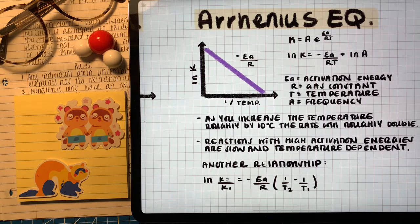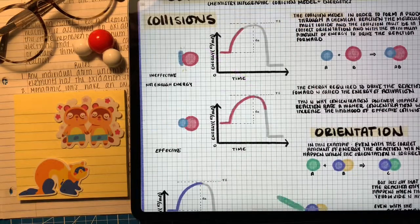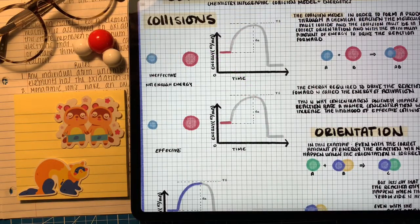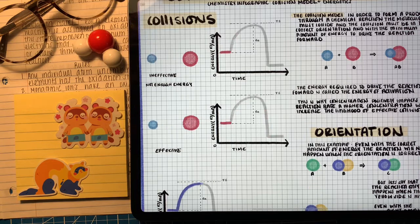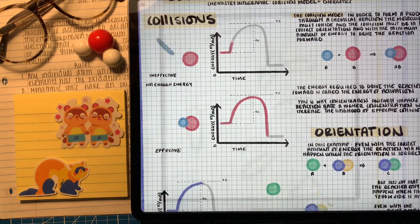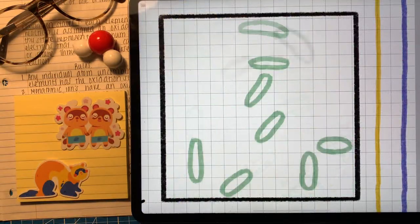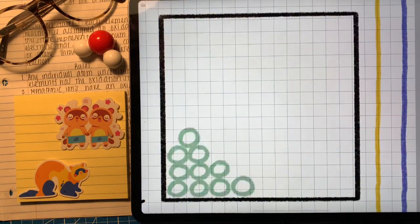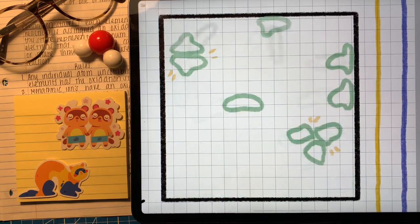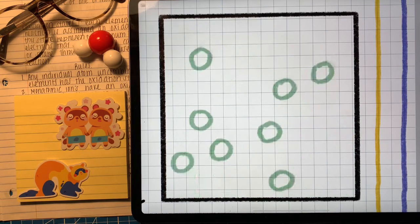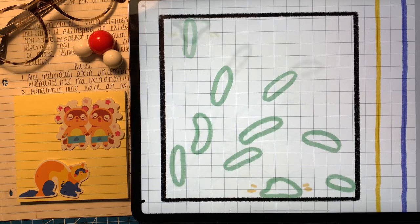Now reactions with high activation energies are slow and are very temperature dependent because in order to breach that activation energy they're very dependent on temperature to give it that kinetic motion. Increasing the temperature of a system is going to increase the kinetic energy of the molecules in that system so it's going to help speed it up and give more energy in the collisions that the molecules go through.